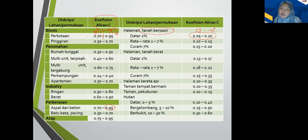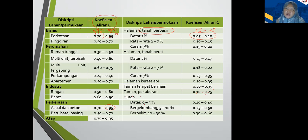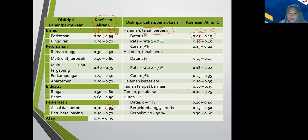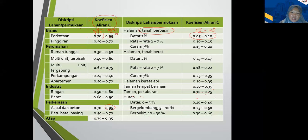Itulah arti dari koefisien-koefisien ini. Kemudian ada taman: 0,10 sampai 0,25. Kemudian hutan yang datar: 10% sampai 40% limpasannya. Sedangkan yang bergelombang dan berbukit, sampai 60% itu menjadi limpasan. Kenapa? Karena air hujan belum sempat masuk ke dalam tanah sudah teralirkan, karena topografinya memiliki kemiringan — air mengalir dari tempat yang tinggi ke tempat yang rendah.